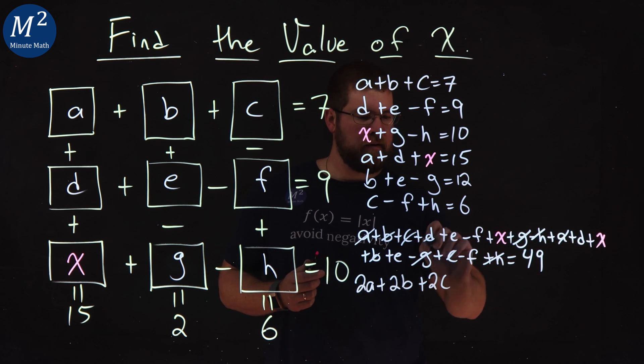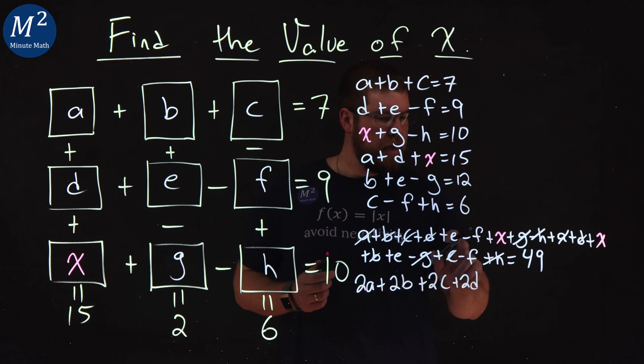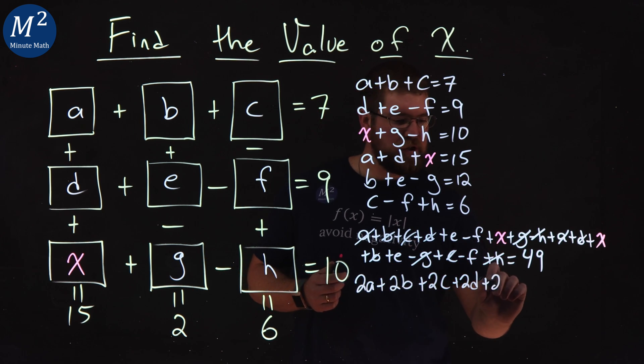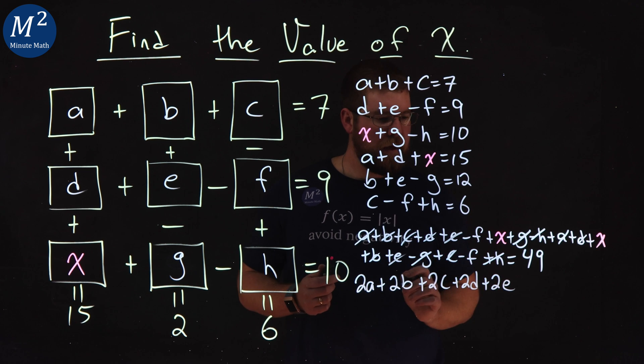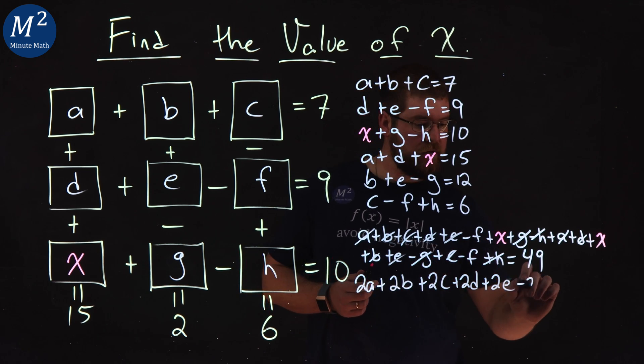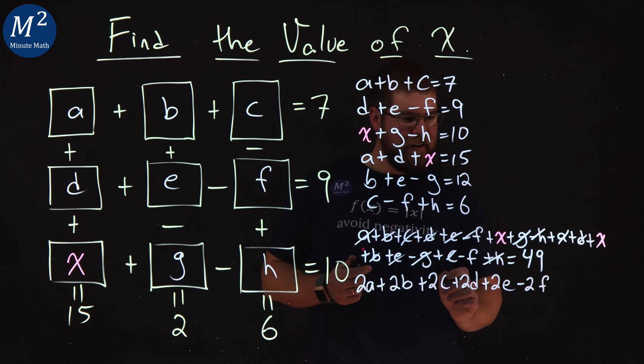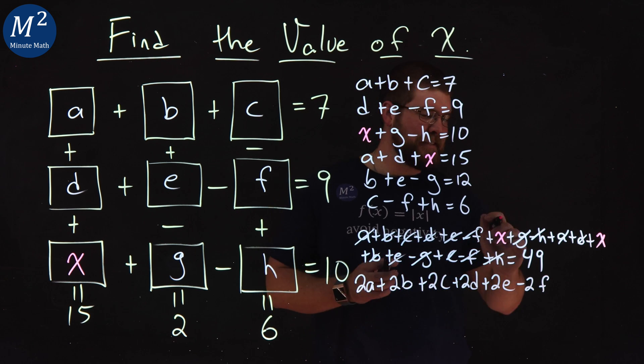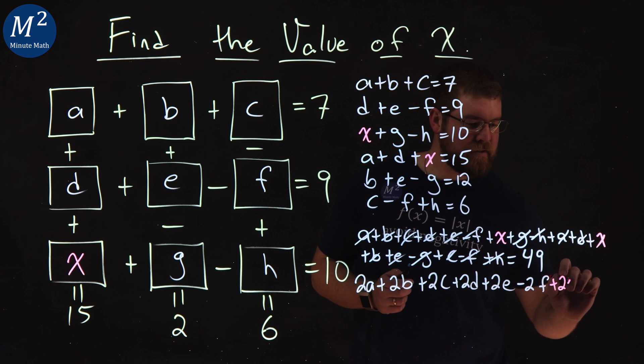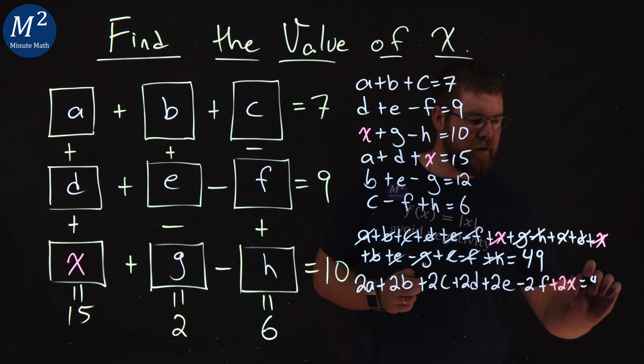D and D. Oh, good old plus 2D. E and E, we have plus 2E. And what we have left, we have the Fs. We have a minus of 2F. And I think that's it. Oh, minus of 2F here. And then the Xs. I almost forgot the Xs. Plus a 2X. They cancel. And we have that equals a good old 49.